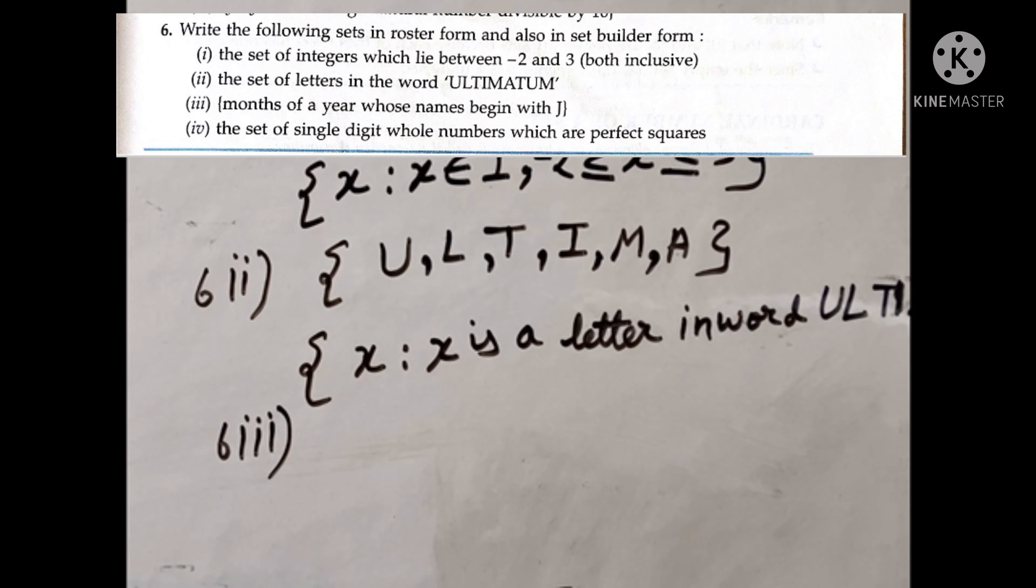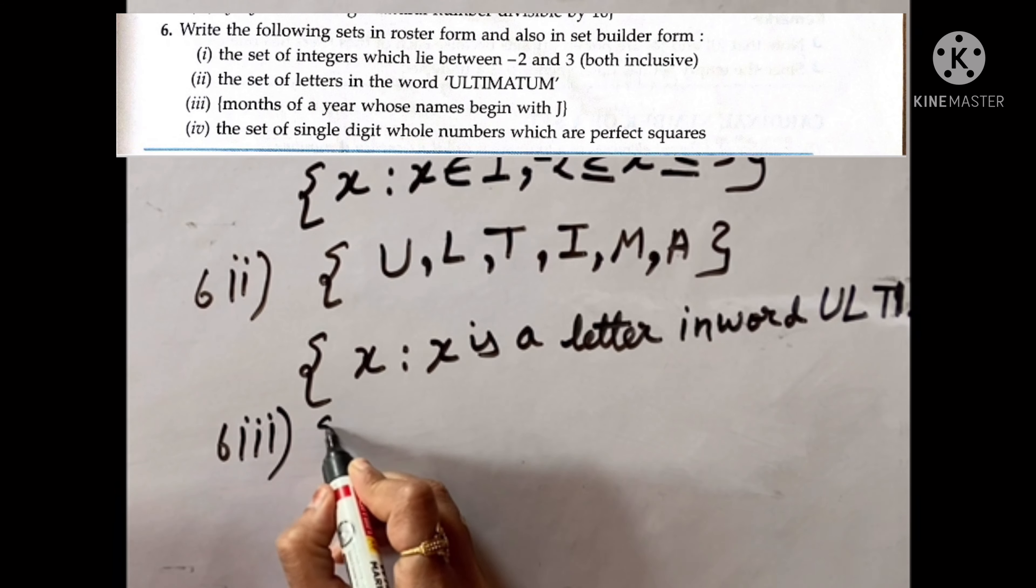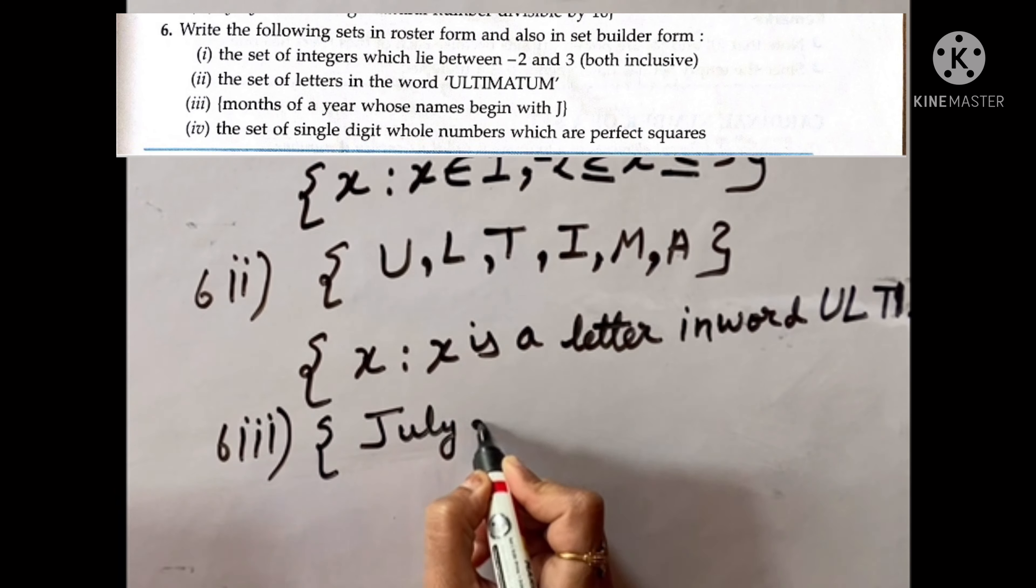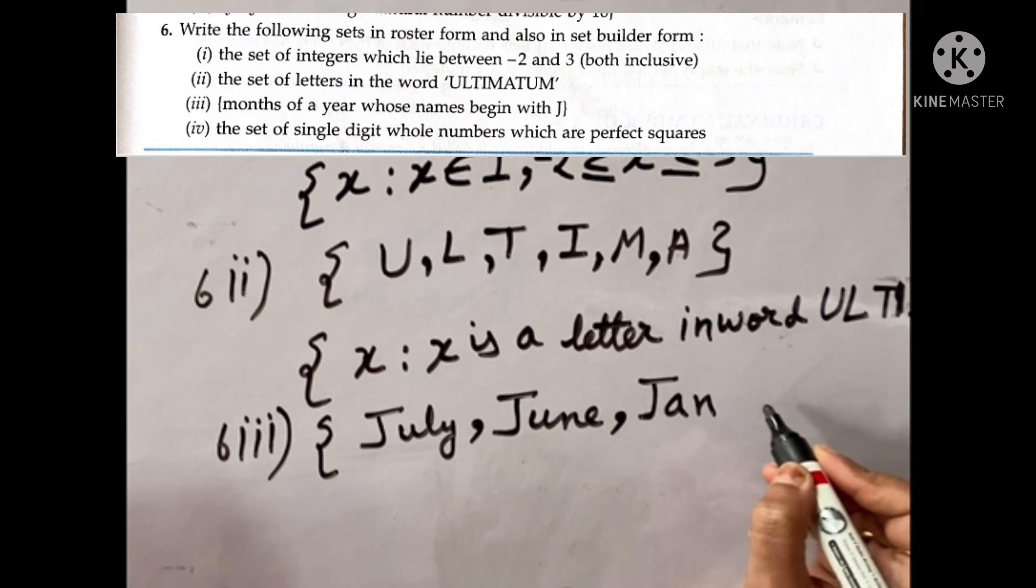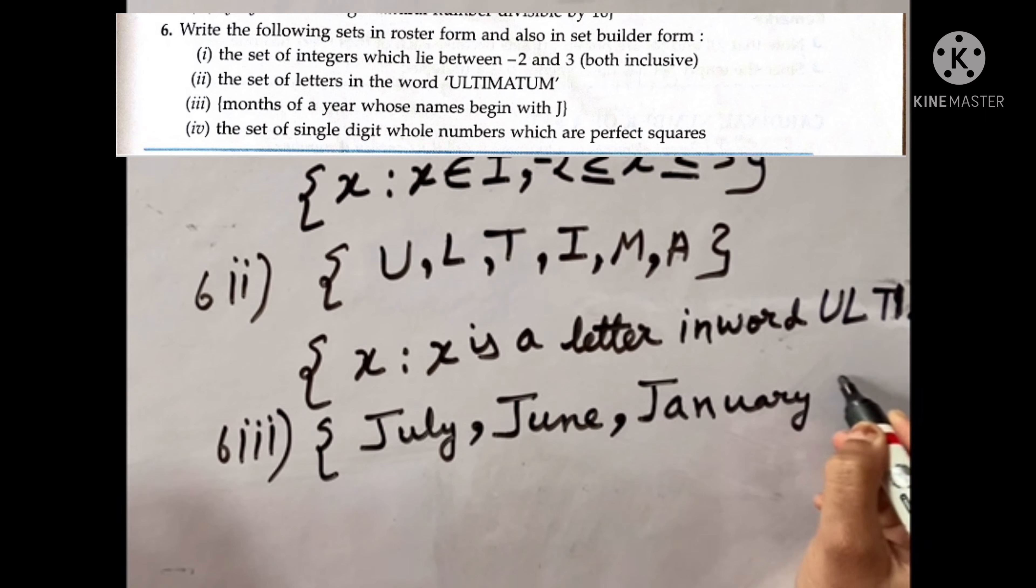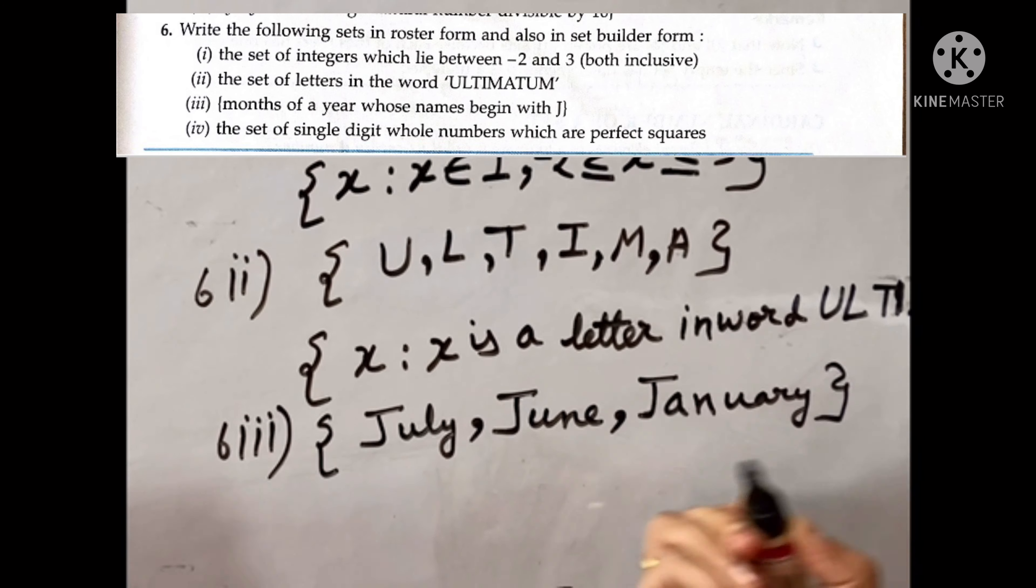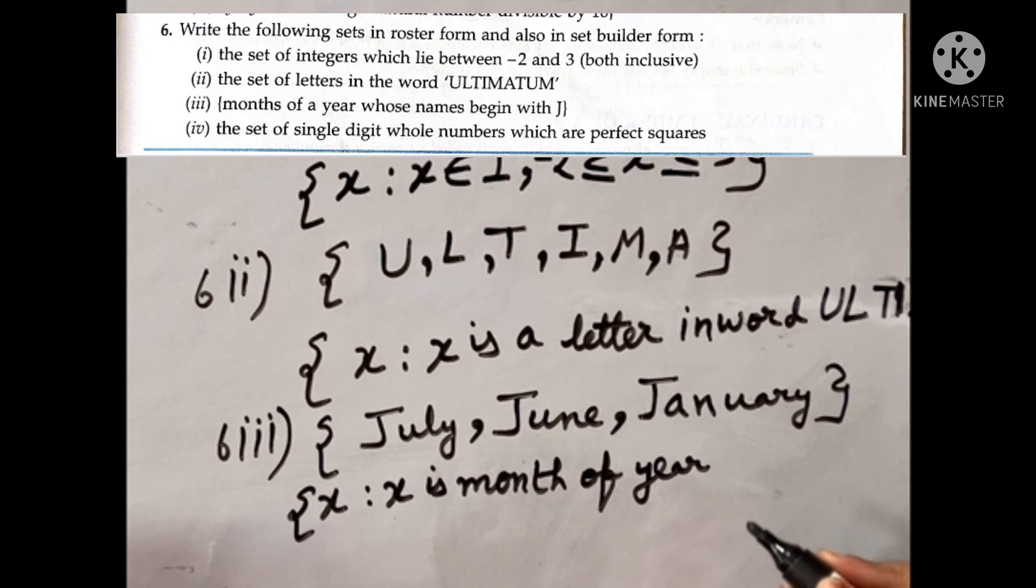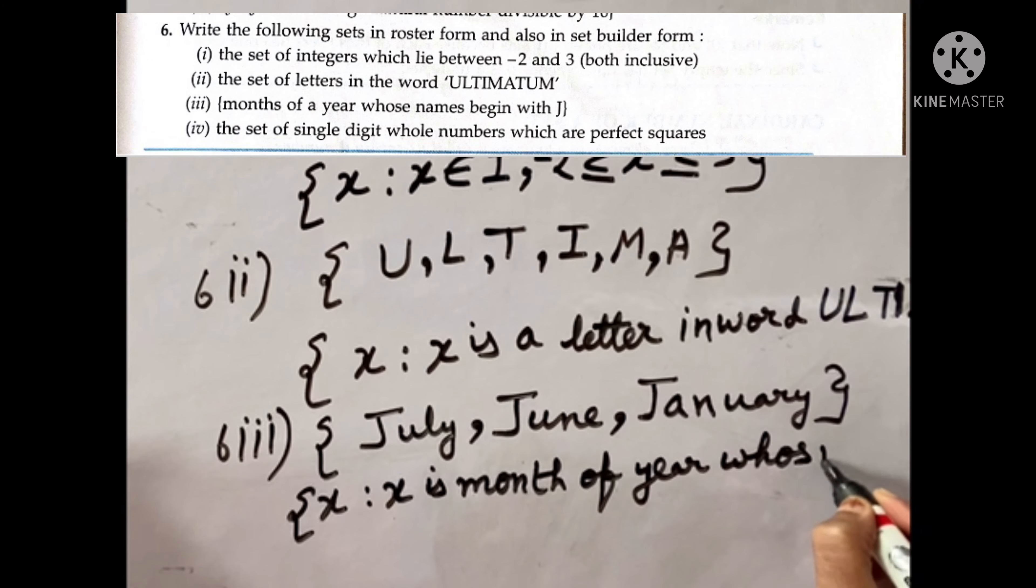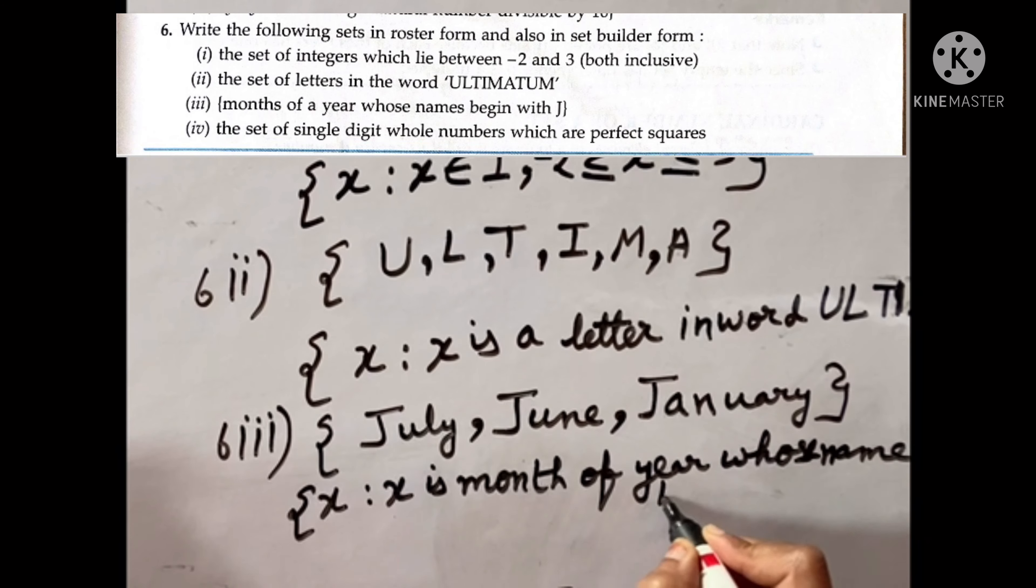Now sixth question third part. We have to see the question first. So it is the month of the year whose names begins with J. J se korn korn se months shudu hoote hai? July, June, or koi January. J A N U A R Y. So order can be any. Us ke baad X. X is kya hai? X is a month of year. Ab kaisa month hai? Whose name begins with letter J.